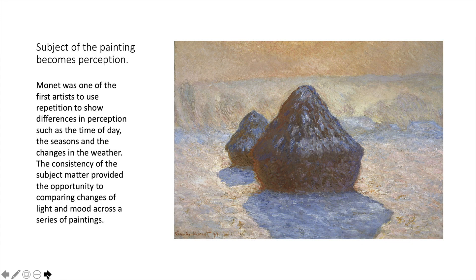Monet was one of the first artists to use repetition to show differences in perception, such as the time of day, the seasons, changes in the weather. The consistency of the subject matter — it was always haystacks; he was just moving around these haystacks in the field — provided the opportunity to compare changes of light, mood, and atmosphere across a series of paintings. This has never been done before.